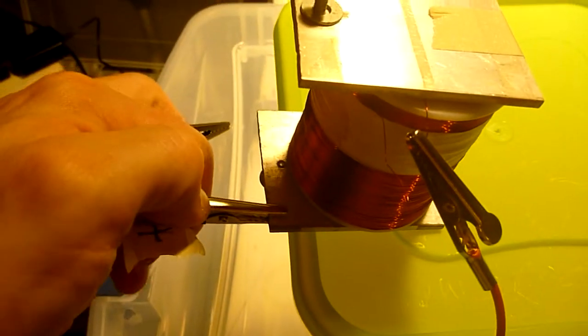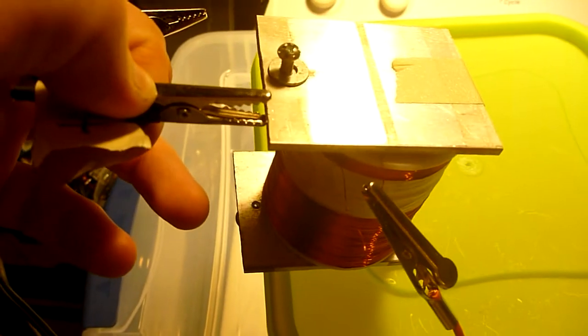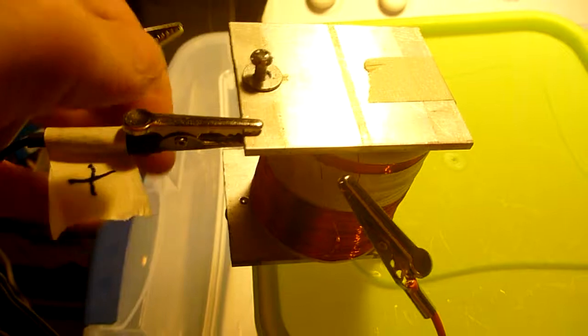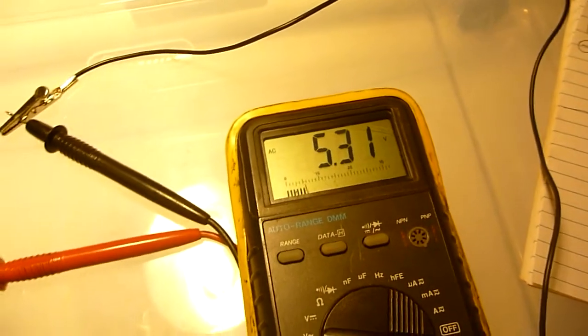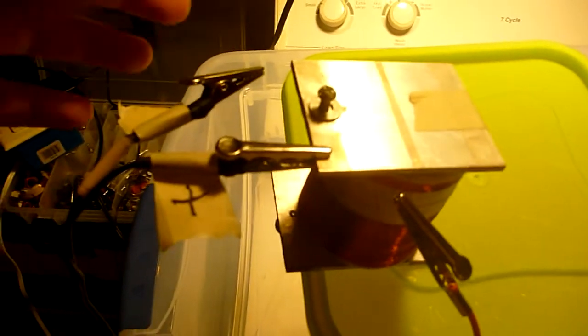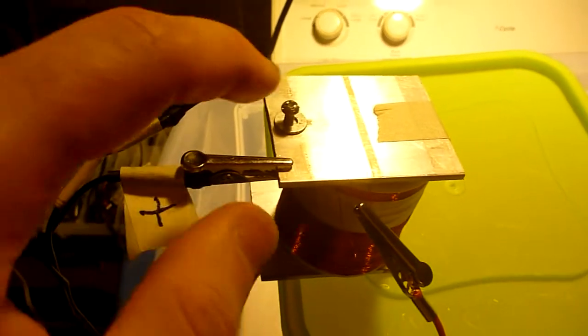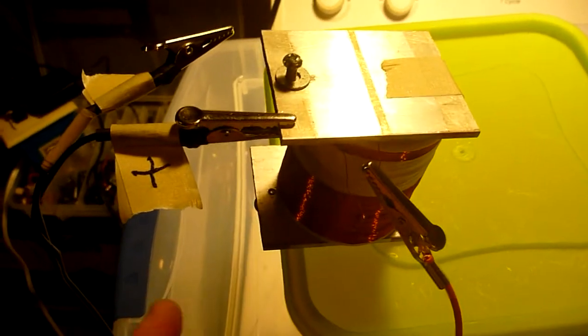Let's move the positive to the top. 5.32 volts. So as you can see the circuit here is broken. We're just charging one side, the other side isn't connected to anything.